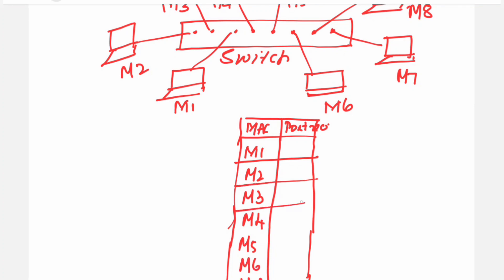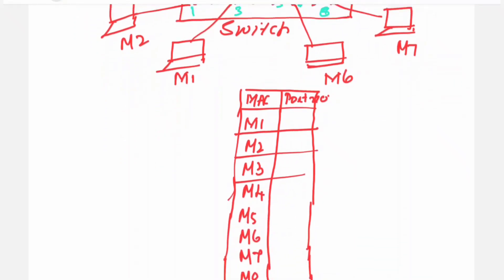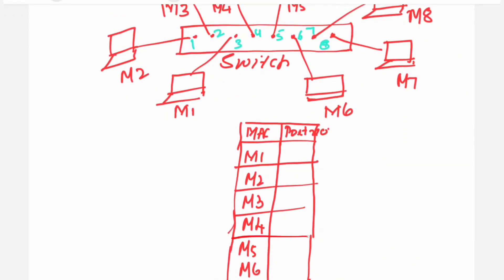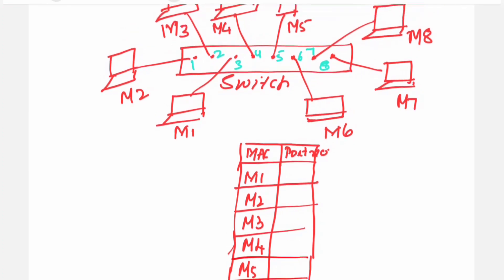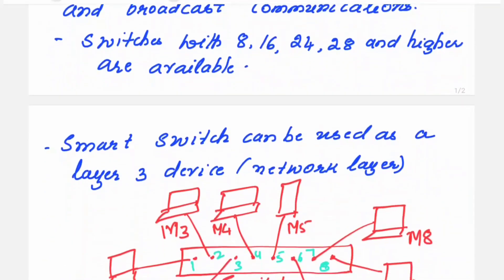Now what about the port numbers? 1, 2, 3, 4, 5, 6, 7 and 8. You can write the port numbers here in the table. Machine M1 is connected to port 3. Machine M2 is connected to port 1. Machine M3 is connected to port 2. This kind of table is called as content accessible memory table. This is the table that is used by the switch in order to forward a packet.